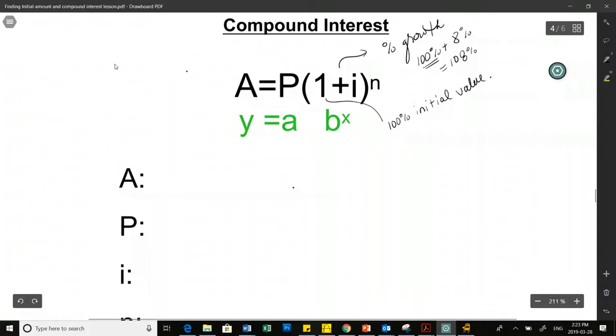And then your i is kind of like your percent growth as a decimal. So really when we're talking about interest, we already know how to do it. And these things are actually going to be basically the same variables. This is going to be like our B value, and this n value is kind of like our x value.